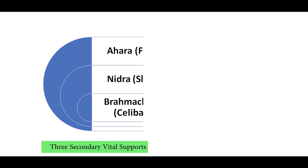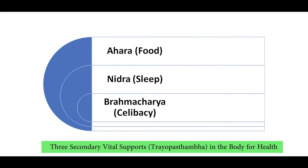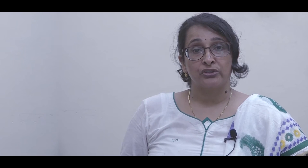Maintenance of health requires balance between the doshas, dhatus and balas. This is possible with the help of the sub-pillars or secondary vital supports which help in nourishment and maintenance of the body — these are Ahara or food, Nidra or sleep, and Brahmacharya or celibacy. These will enhance body strength, complexion as well as nourishment.